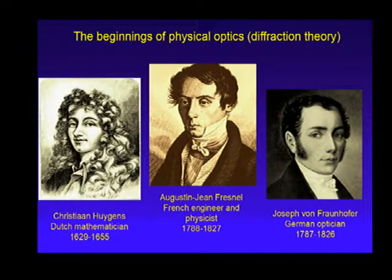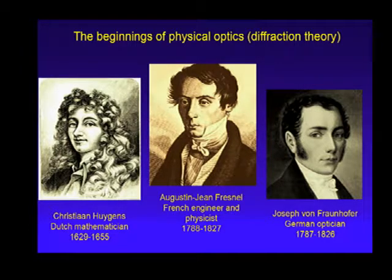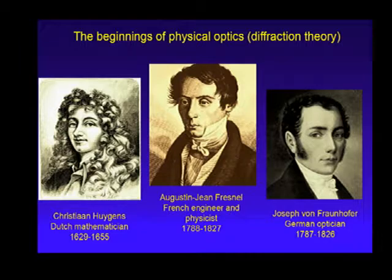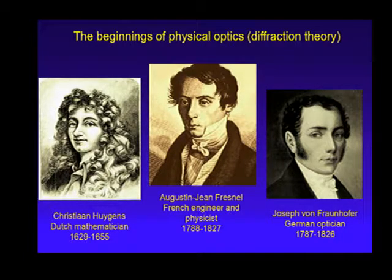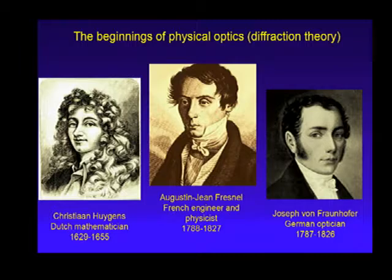The story of optics is not told completely with ray theory alone. You need the wave properties — to calculate and predict what images will look like, you need to understand the interferometric and wave properties of light as it passes through optical systems. For that we have to credit Huygens, Fresnel, and Fraunhofer as the key founders who built modern physical optics theory.